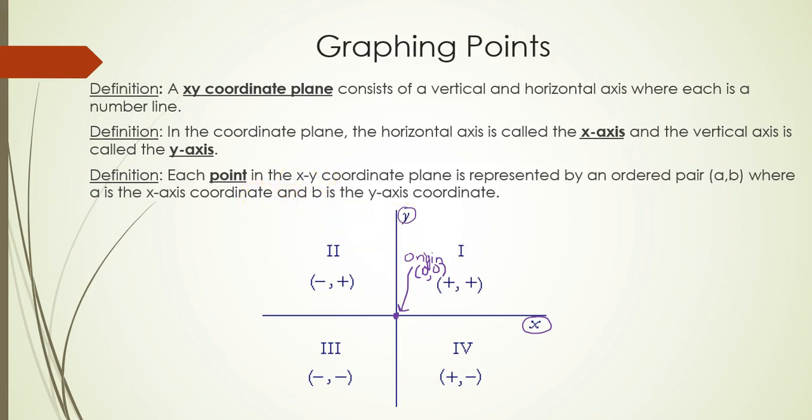On the coordinate plane, we have four regions called quadrants. Quadrant 1 is in the top right, followed by quadrant 2, 3, and 4 in a counterclockwise fashion.